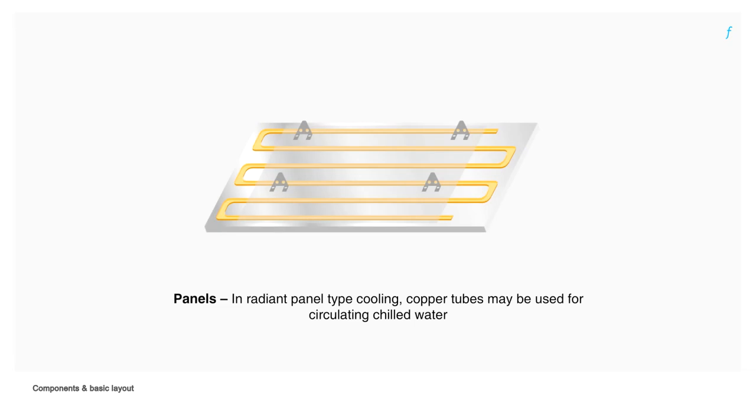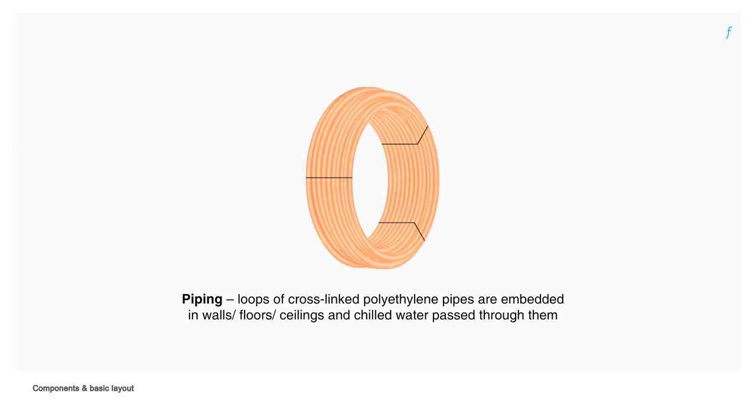Panels: In radiant panel type cooling, copper tubes may be used for circulating chilled water. Piping: Loops of cross-linked polyethylene pipes are embedded in walls, floors, ceilings, and chilled water is passed through them.